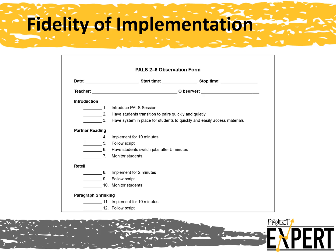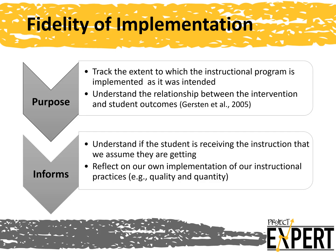A fidelity of implementation data checklist is another source of data we can use. We often use specific plans or programs to deliver high quality evidence-based instruction to the students who need it most. However, if a student isn't responding to our instruction, we need to be sure that they're receiving the instruction in the way we believe they are. If fidelity to the program implementation is low, we must improve our ability to deliver the program. Using a fidelity of implementation data check, we can track the extent to which the instructional program is implemented as intended, understand the relationship between the intervention and student outcomes, and reflect on our own implementation of instructional practices — for example, the quality and quantity.